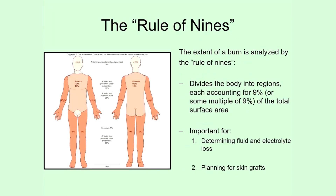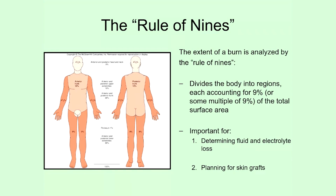Now let's talk about the rule of nines. This is a system used to assess and analyze burns and to plan treatment for burn victims. You may have heard news reports saying that someone had 30 percent of their body covered in third degree burns — this is how we calculate that percentage. The rule of nines divides the body into regions, as you can see in this diagram, with each region assigned as nine percent or some multiple of nine percent of the total body surface area.